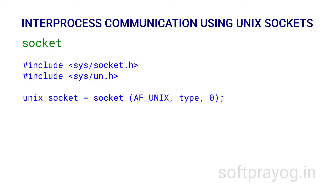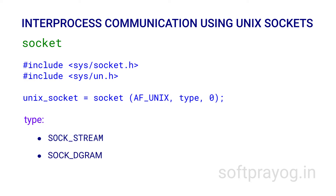A socket is a communication endpoint used by a process. A process creates a socket with a socket system call. In case of UNIX domain sockets, the first parameter is always AF_UNIX. The second parameter can be SOCK_STREAM for stream-oriented sockets, or SOCK_DGRAM for datagram-oriented sockets that preserve message boundaries.